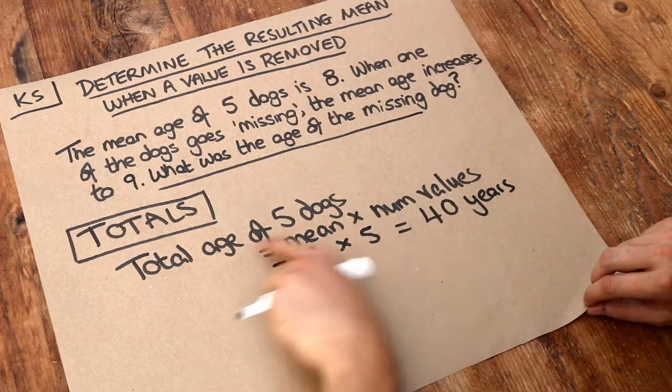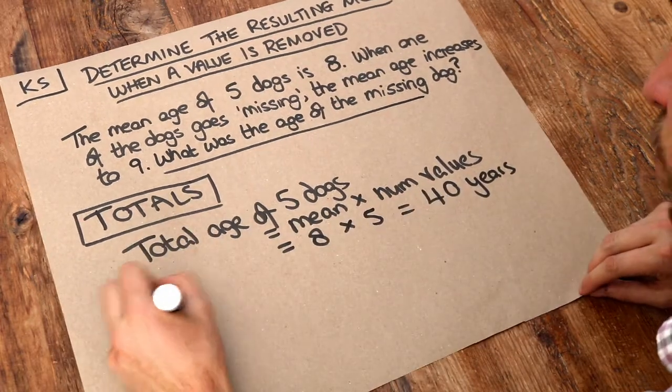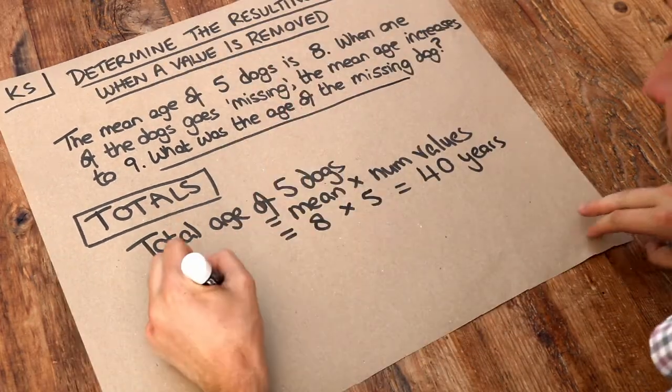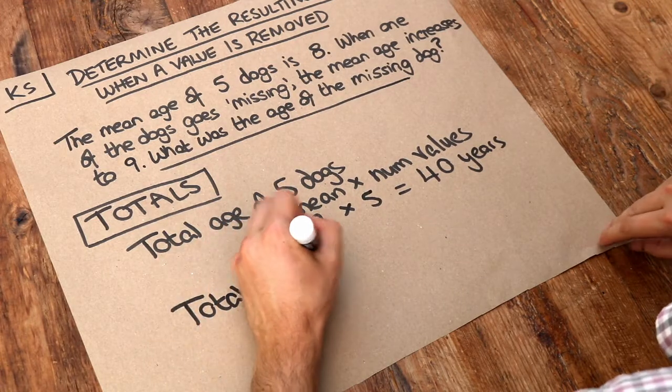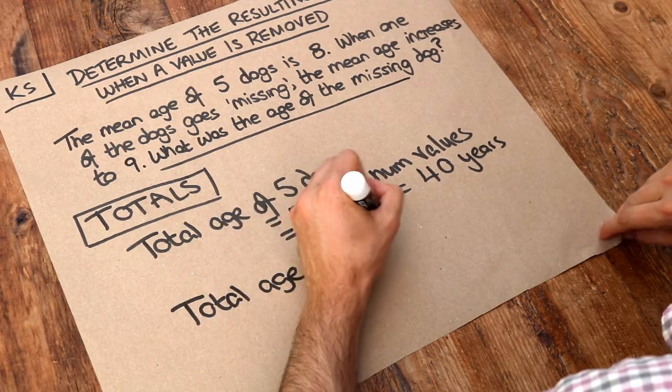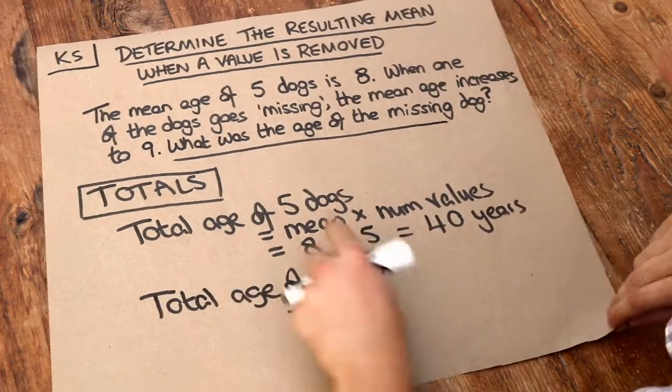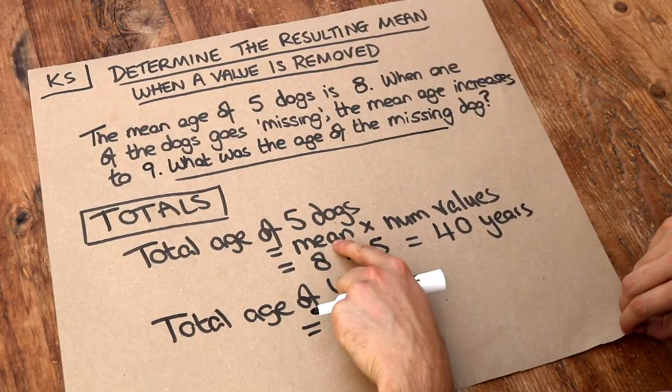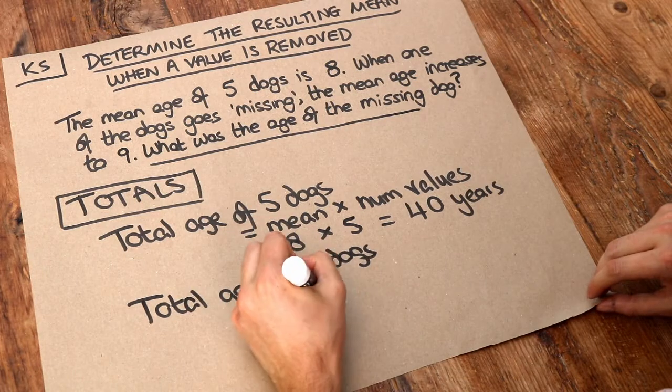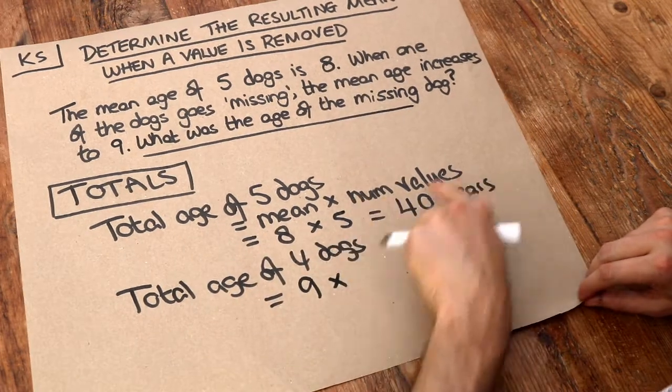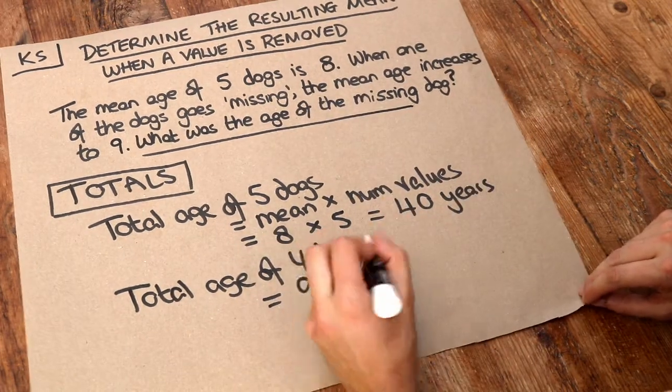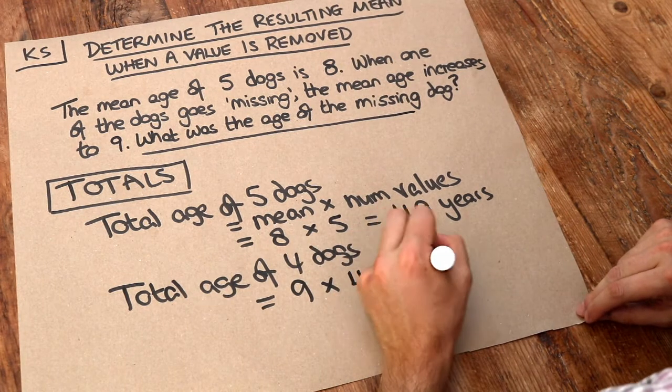Now let's think about the total age of the four dogs after one dog goes missing. So the total age of the four remaining dogs. Again, we do the mean age of those remaining dogs, which is nine, and we times by the number of values, how many dogs there were, which is four. And that gives you 36 years.